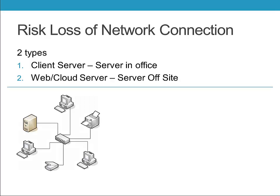Let's talk about the client-server system first. You can see that there are multiple different devices here — scanners, printers — and you could have a tablet as well. All those computers on a client-server system connect to a router first, where the internet comes in, as well as where the server connects. So to connect to the server, they first have to connect to the router, and then connect to the server. That's how the data is shared, through that central router.